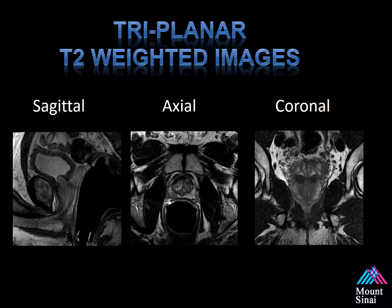This is an example of the anatomical sequence — sagittal, axial, and coronal reconstructions of the T2-weighted images. Each one of these sequences is obtained independently. We find it helpful when a lesion is present in both sequences, as it really increases confidence in calling it a lesion. We typically like to look at multiplanar T2-weighted images during our diagnostic process.